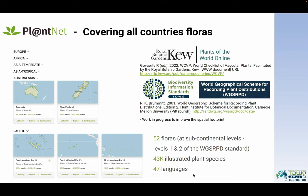We have also worked for more than two years on the evaluation and implementation of two international standards to improve the capacity of the platform. We take advantage of the World Checklist of Plants of the World Online, maintained and shared by Kew Royal Botanical Gardens, and also the WGSRPD standard developed by Stace and dedicated to sharing a World Geographical Schema for recording plant distribution. Using both international standards, we were able to propose access to 52 distinct floras designed at the subcontinental level, based on level 1 and 2 of the WGSRPD standards.